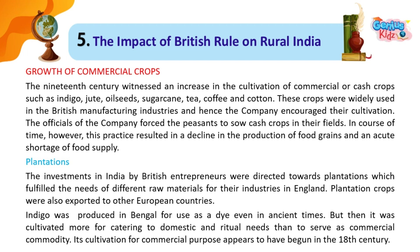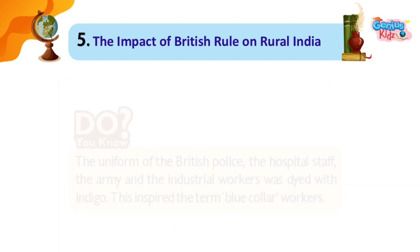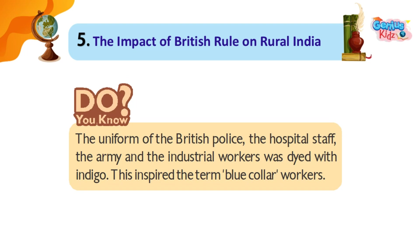Plantations: The investments in India by British entrepreneurs were directed towards plantations which fulfilled the needs of different raw materials for their industries in England. Plantation crops were also exported to other European countries. Indigo was produced in Bengal for use as a dye even in ancient times. Do you know? The uniform of the British police, hospital staff, the army and industrial workers was dyed with indigo — this inspired the term 'blue-collar workers.'